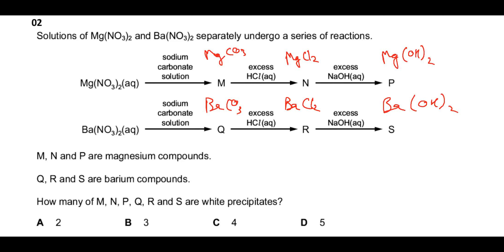Carbonates are precipitates — that's one each, so M and Q are precipitates. Chlorides are soluble, so N and R are not precipitates. For hydroxides, solubility increases down the group, so magnesium hydroxide is less soluble than barium hydroxide — meaning P (magnesium hydroxide) is also a precipitate. In total, there are three possible white precipitates: M, Q, and P. The correct option is option B.